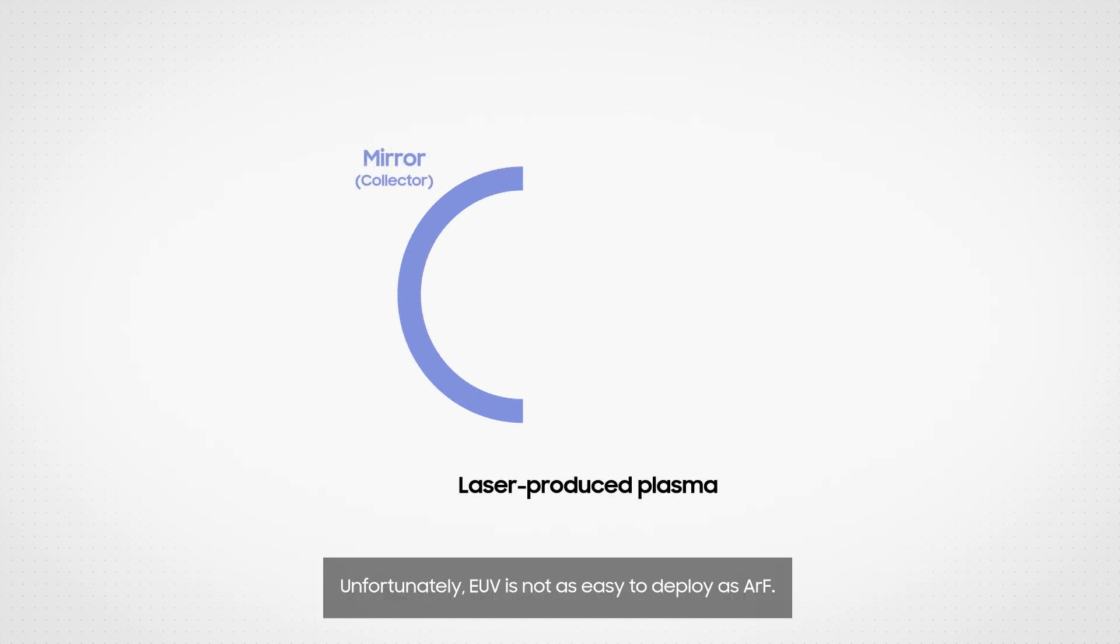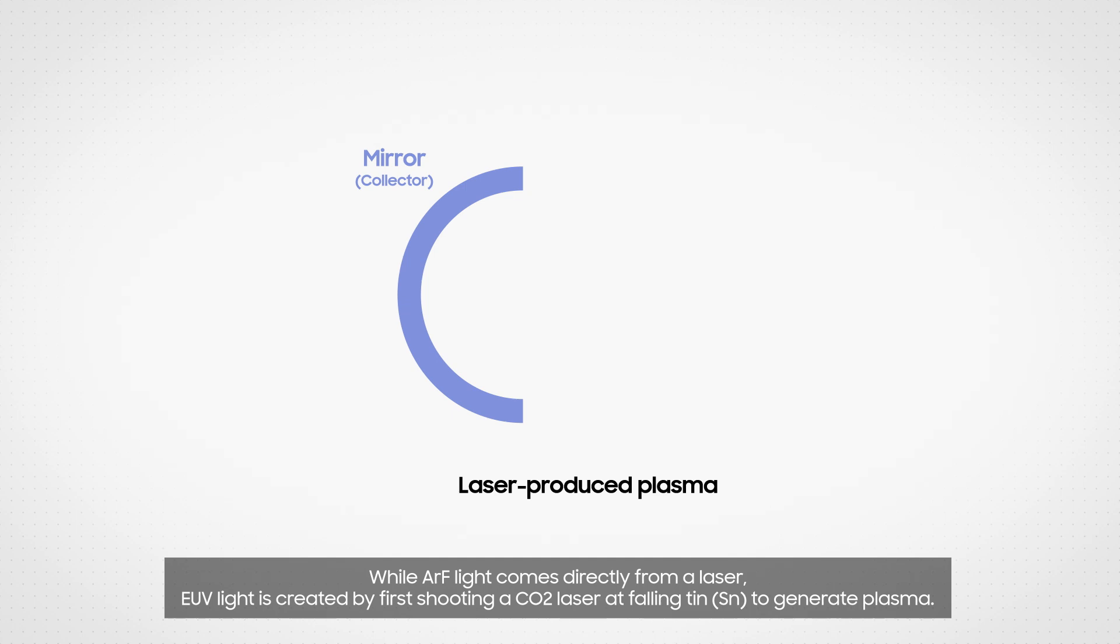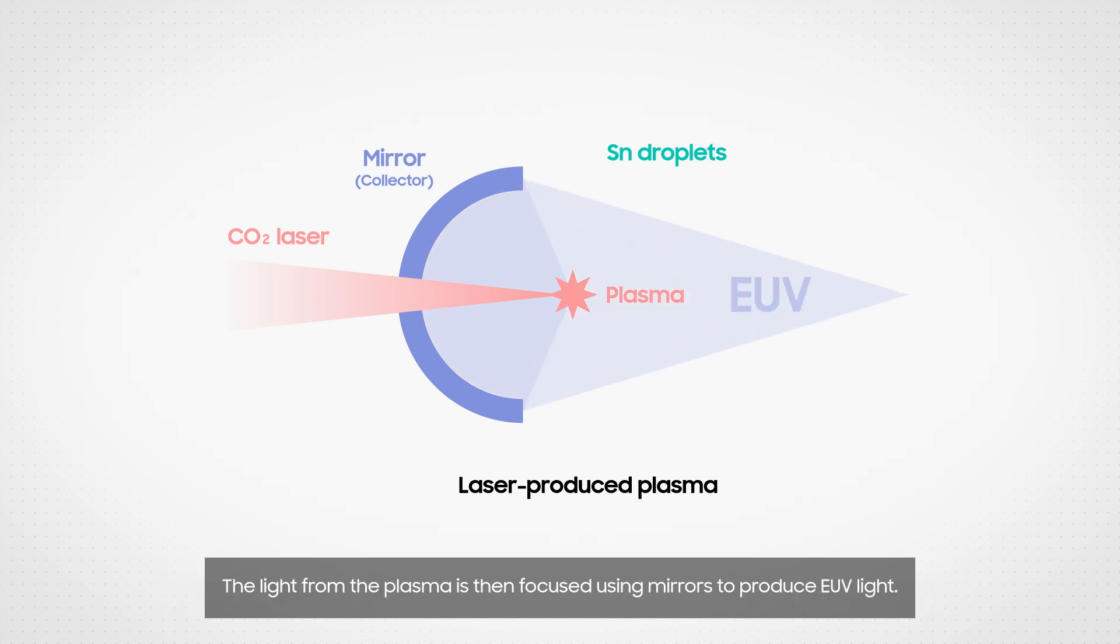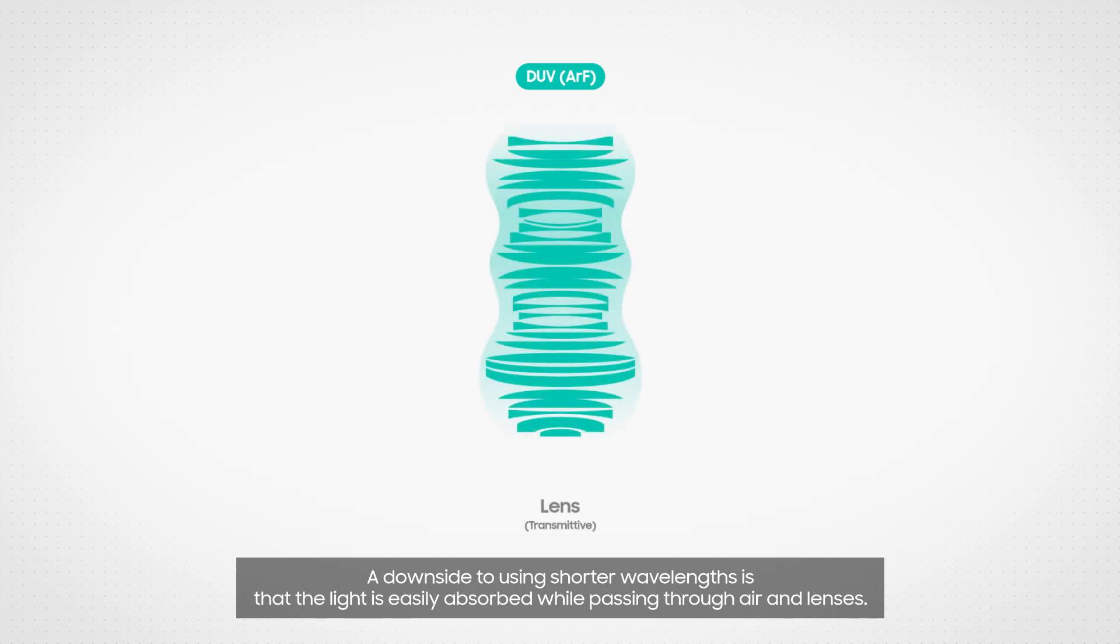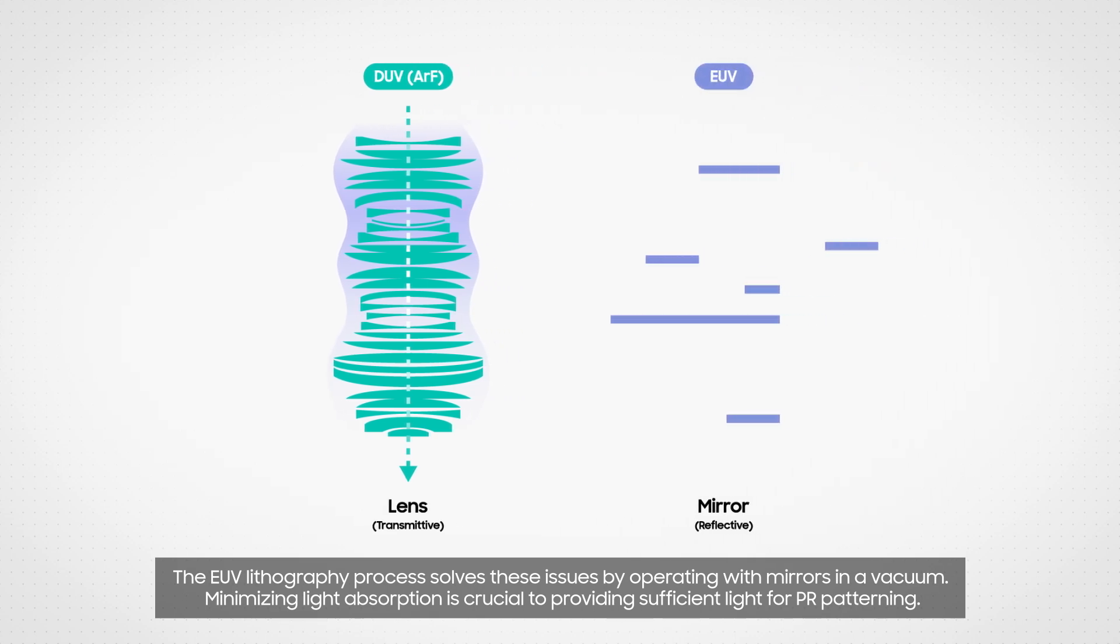Unfortunately, EUV is not as easy to deploy as ArF. While ArF light comes directly from a laser, EUV light is created by first shooting a CO2 laser at falling tin to generate plasma. The light from the plasma is then focused using mirrors to produce EUV light. A downside to using shorter wavelengths is that the light is easily absorbed while passing through air and lenses. The EUV lithography process solves these issues by operating with mirrors in a vacuum, minimizing light absorption.